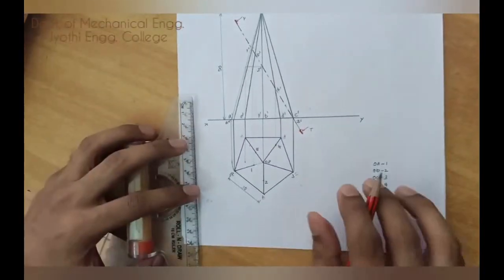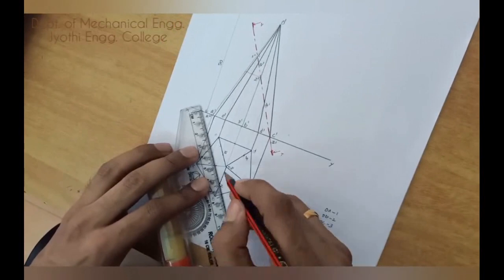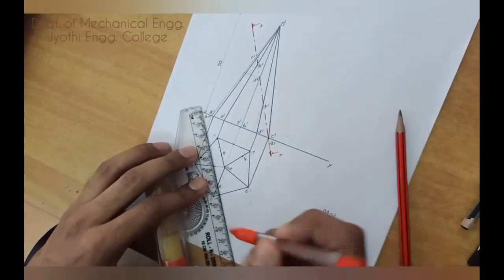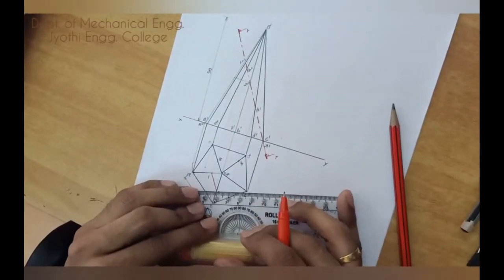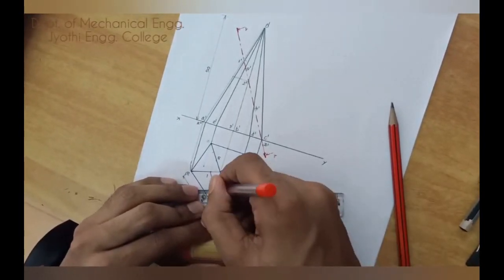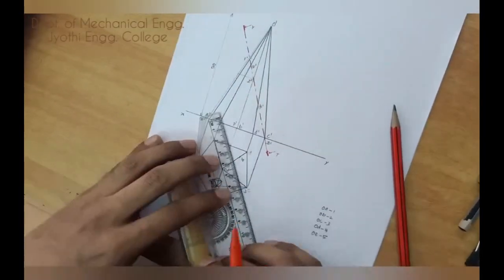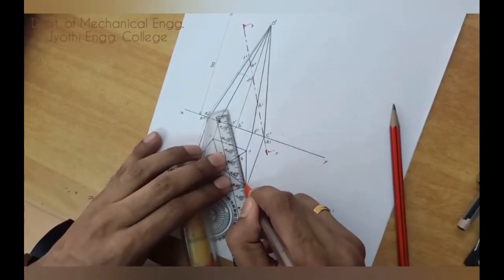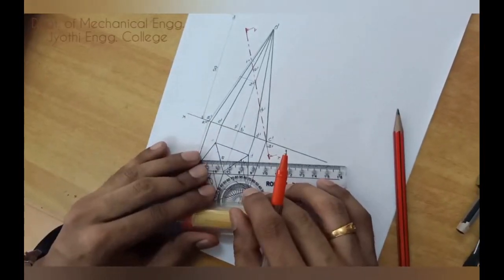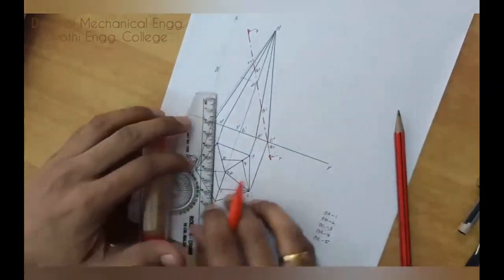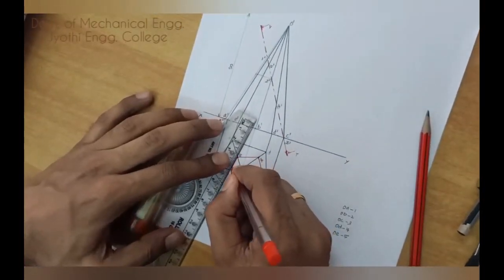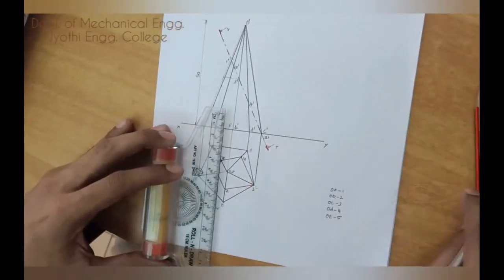Now you join all the points. 1 to 2, 2 to 3, 3 to 4, 4 to 5, 5 to 1. So this is the sectional top view.